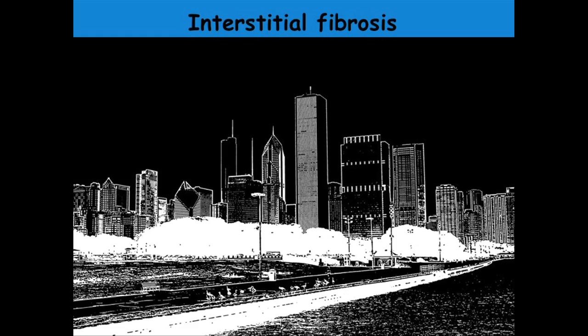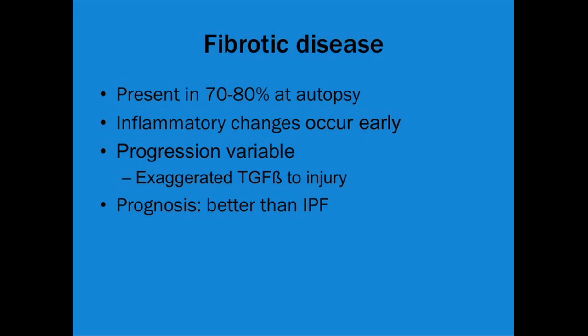A little bit more about interstitial disease. It's very common — if you look at patients who die with scleroderma very carefully, you'll find it in 70 to 80%. I spent a couple of years in pathology as a pulmonary fellow and I have an appointment in pathology now. I look at all my tissues and spend a great deal of time looking for little things, both in tissues and with my patients.